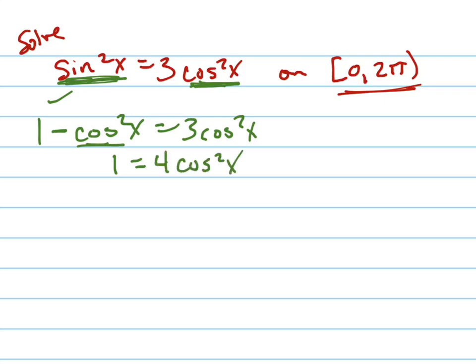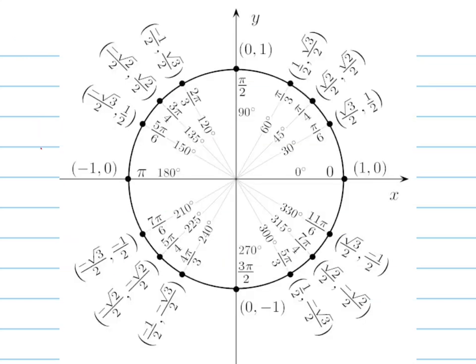1 = 4cos²x, which means 1/4 = cos²x, which means cos x = ±1/2. Don't forget the plus or minus. A lot of people forget that. So where is the cosine of x equal to ±1/2?